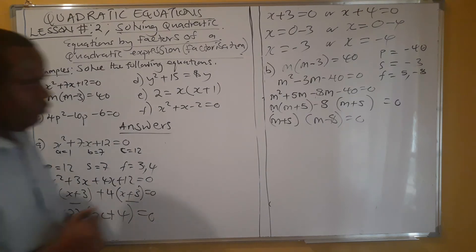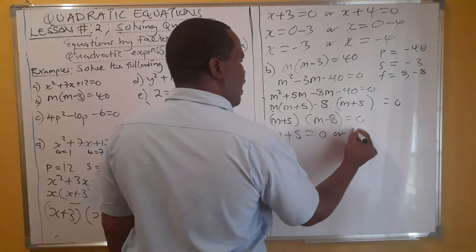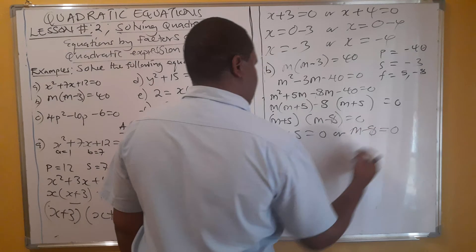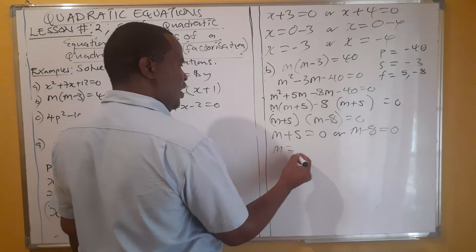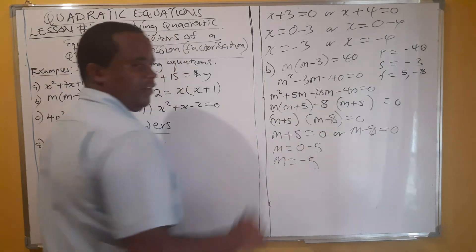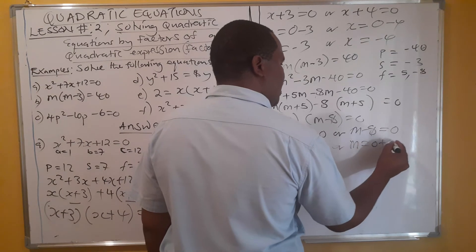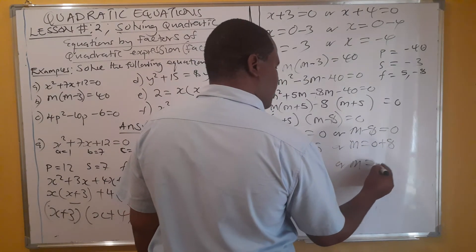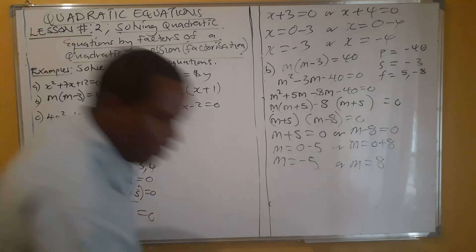Applying the zero product property: either m + 5 = 0, giving m = −5, or m − 8 = 0, giving m = 8. So we have solved that problem. The solutions are m = −5 or m = 8.